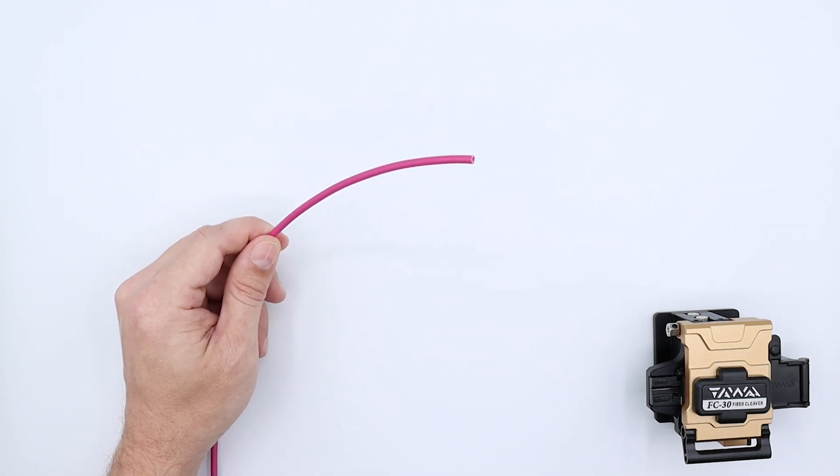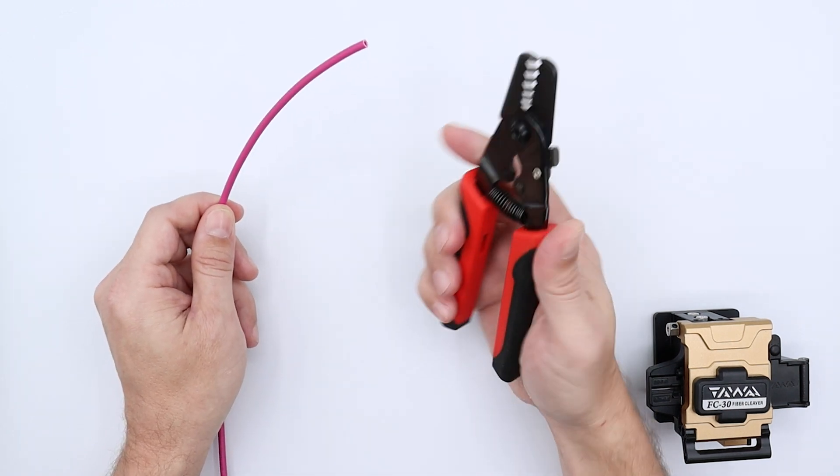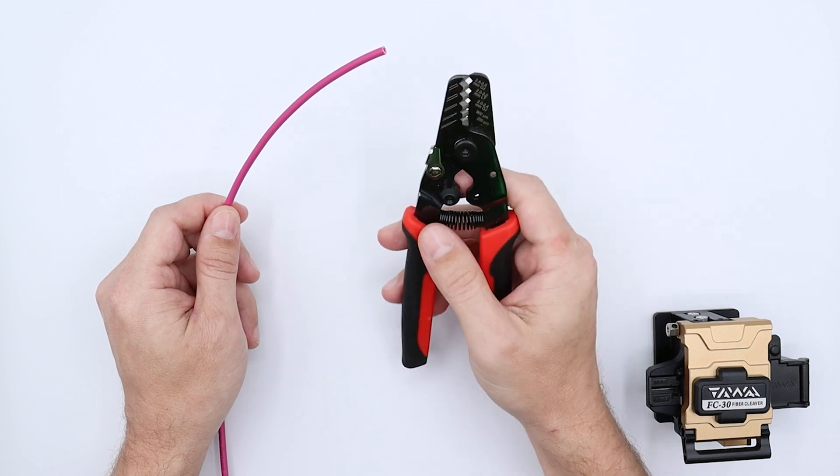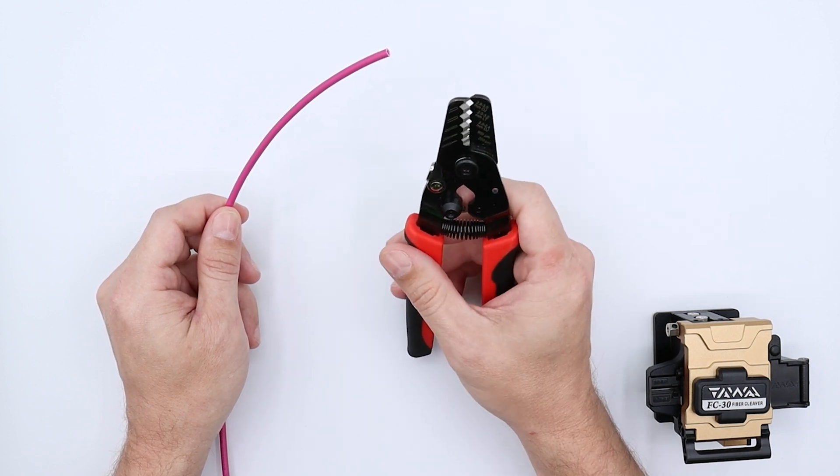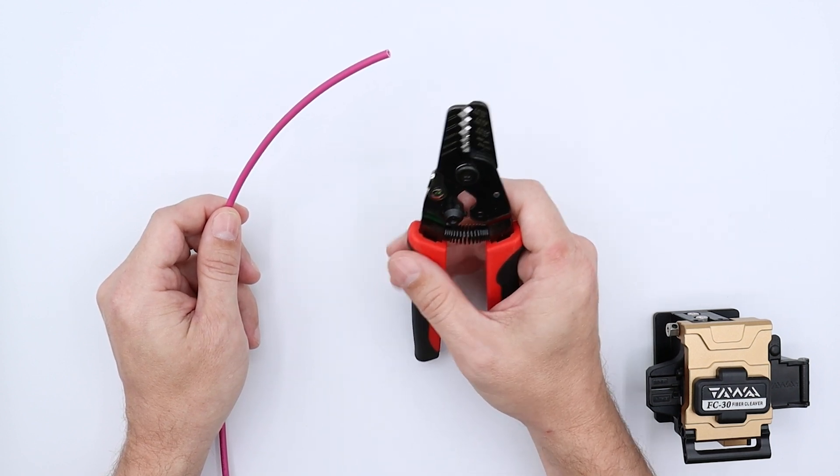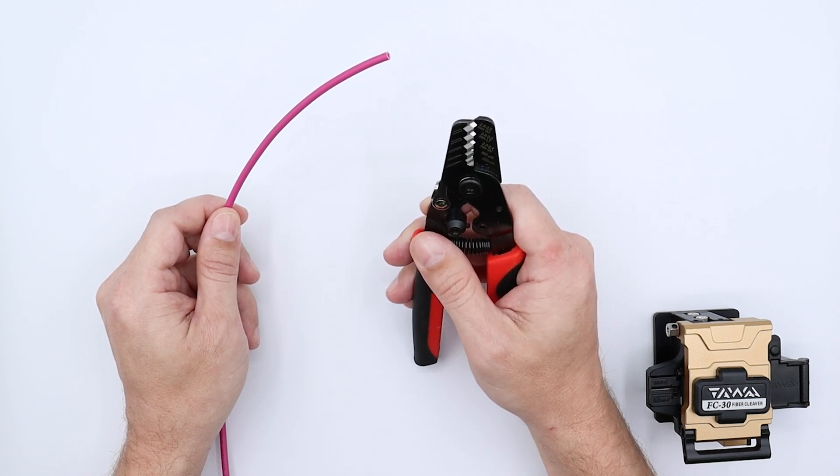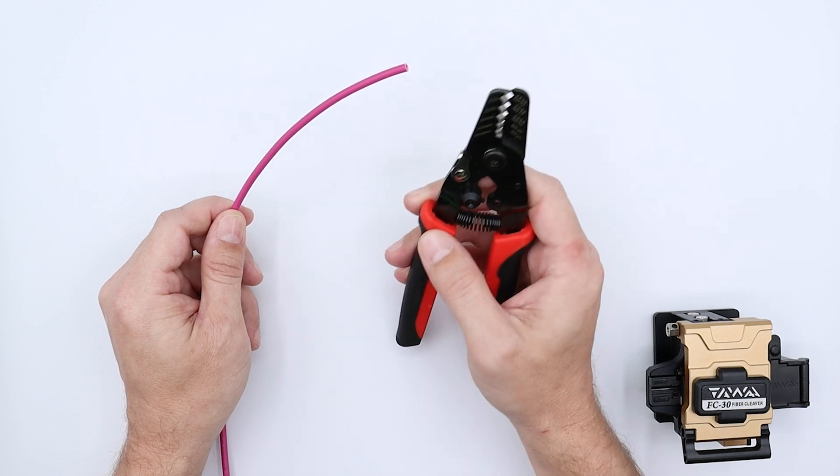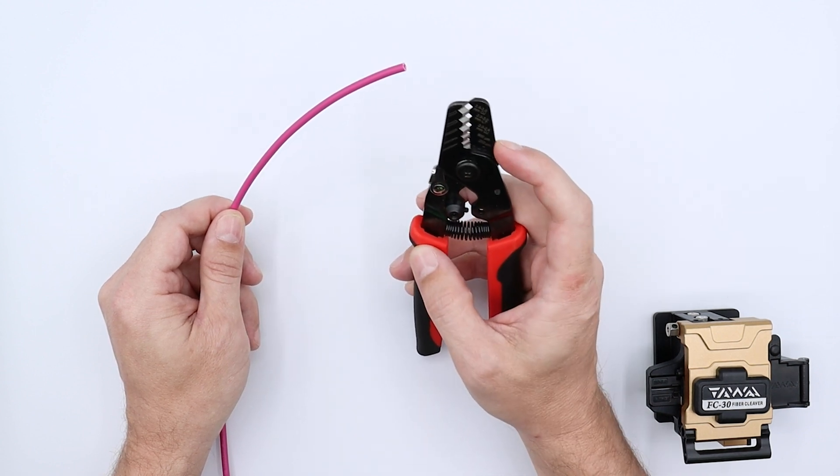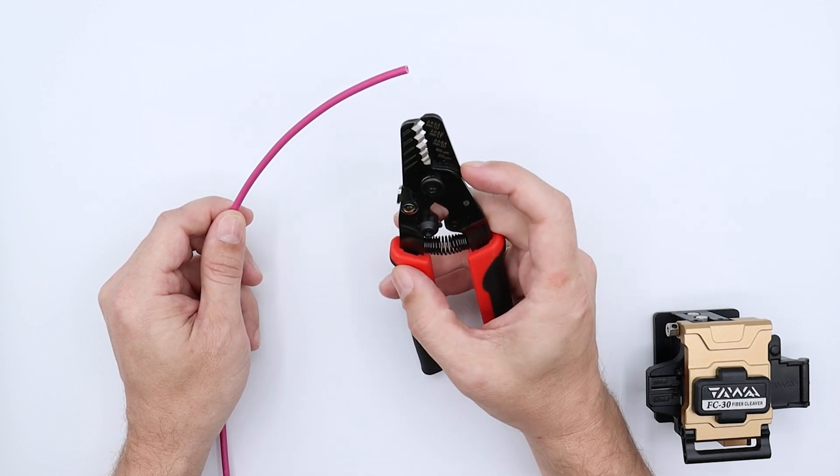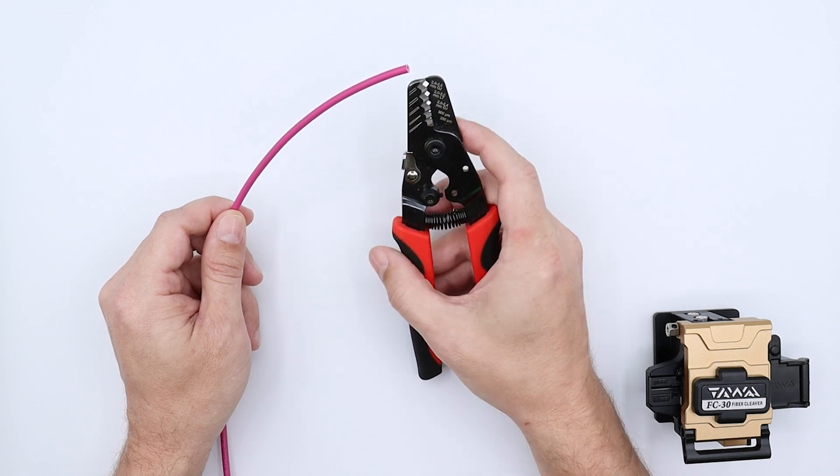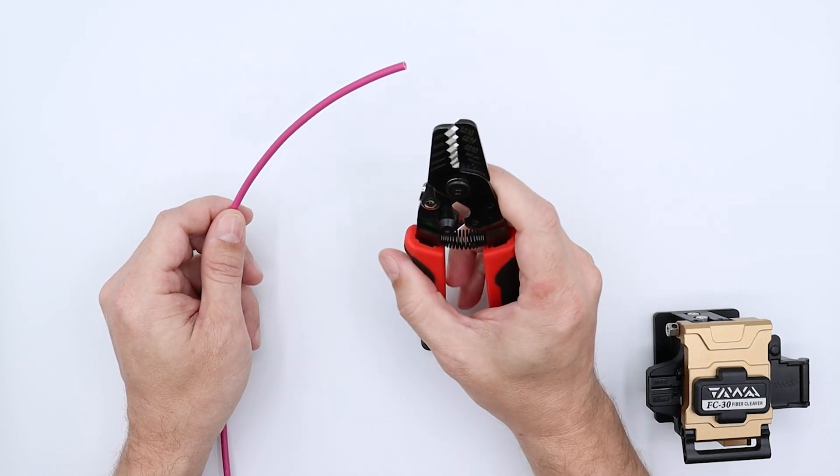First off, we're going to put our safety glasses on. We're going to need these fiber strippers. There's various different kinds of fiber strippers out there, but this one particularly has the ability to strip back the 3 millimeter jacket, then we have a 900 micron for the buffer, and then down to 250 micron to take that acrylate coating off.